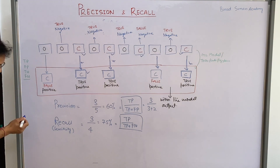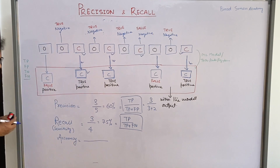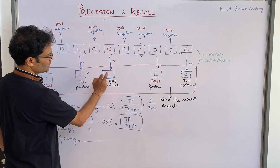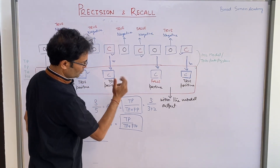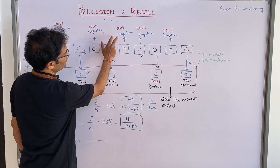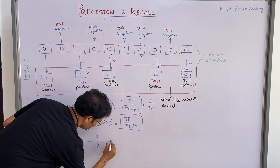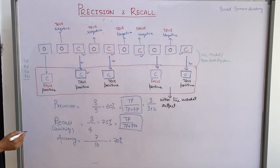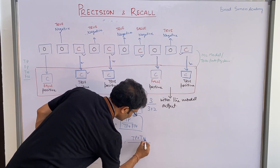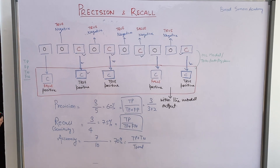One more definition: accuracy. Accuracy tells you how many things overall your model is saying correctly. In our example, the model correctly identified 7 out of 10 records — three true positives and four true negatives. The formula for accuracy is: true positives plus true negatives divided by the total number of records.